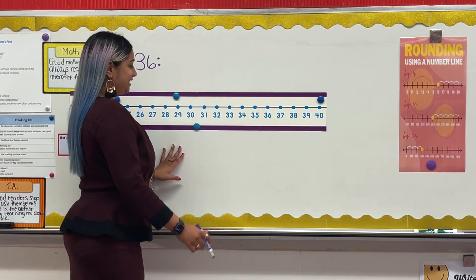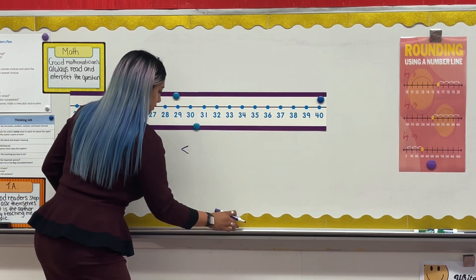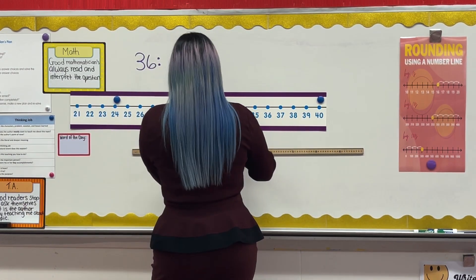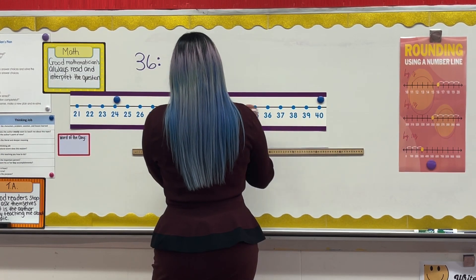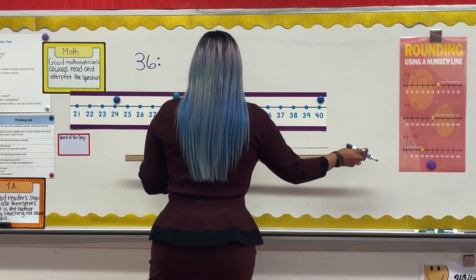We are going to be rounding the following number to the nearest 10 using a number line. Once I'm done drawing my line, I want to ask myself, what two 10s is 36 in between?